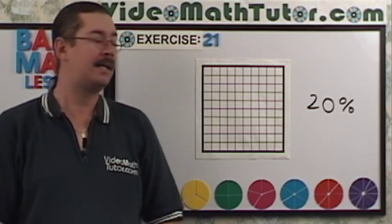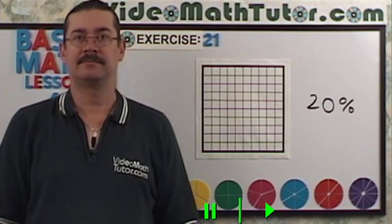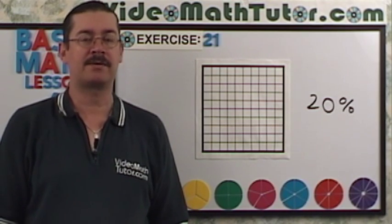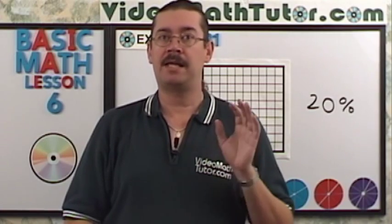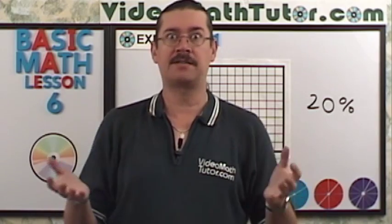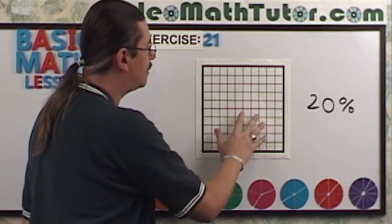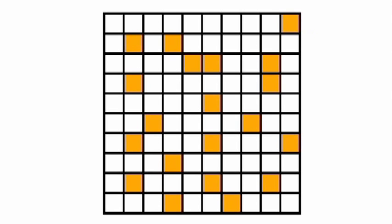For exercise 21, I'd like you to shade the portion of this graph that represents 20%. Well, the answer, all you need to do is shade this portion right here. I just want to let you know that isn't the only solution. There's lots of ways of representing 20%. As long as 20 of these squares are shaded in, that's an answer. Here's another example. So leave it like the first solution I gave you.